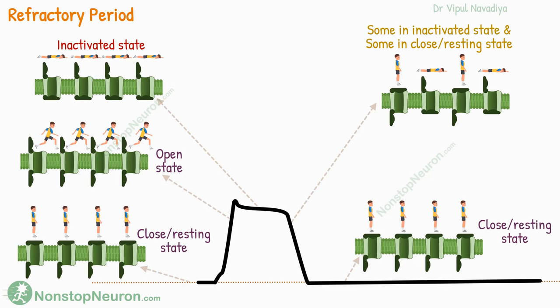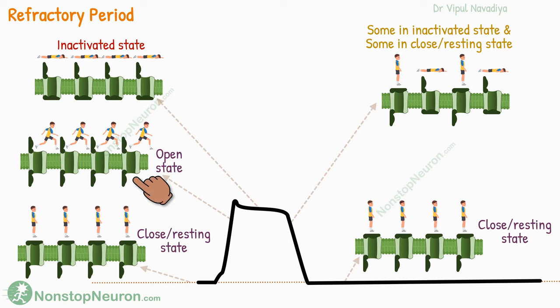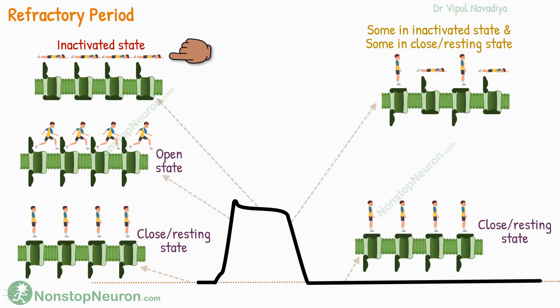Before we see the types of refractory periods, let's quickly revise the various configurations of calcium and sodium channels. At the resting membrane potential, they are in a closed or resting configuration — it's like they are ready to run. During the upstroke, they are in an open configuration, allowing the passage of ions — it's like an active running state. After that, they stay in an inactivated state for some time, like they are taking a complete break from all the business.